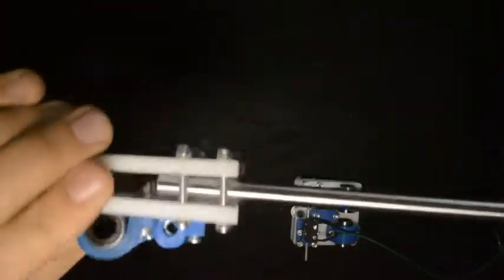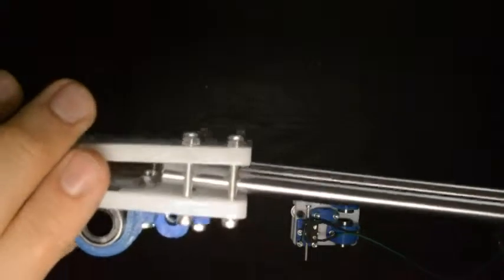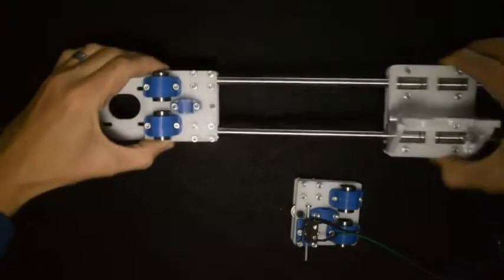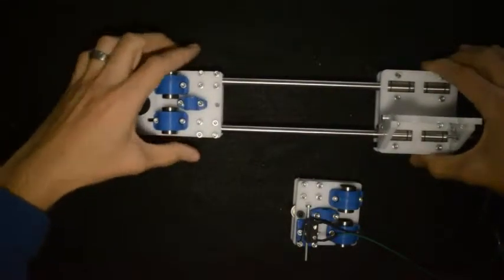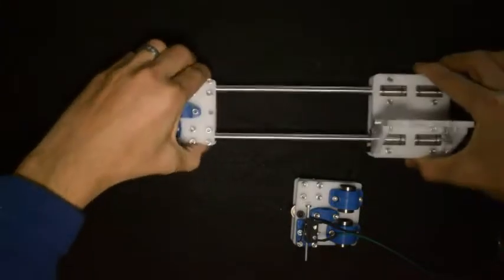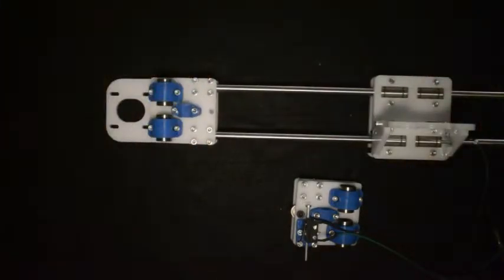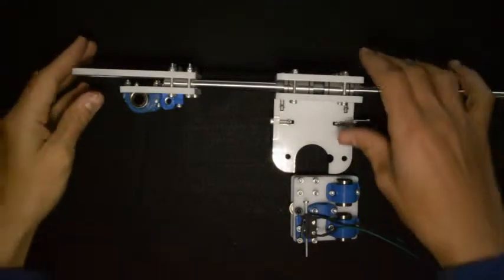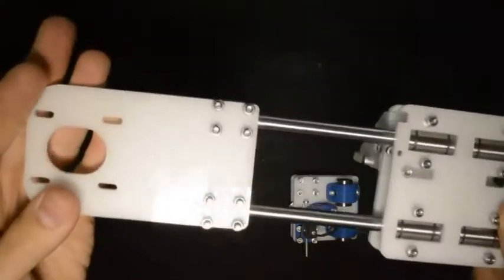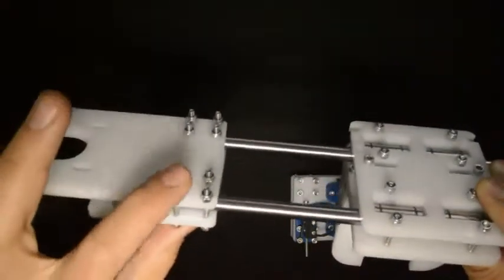And then we will tighten the screws that we only hand tightened previously. The function of these screws is to clamp the linear rods and hold them in place. When you are done with that, the assembly should look like this, with the linear rods clamped into the end.